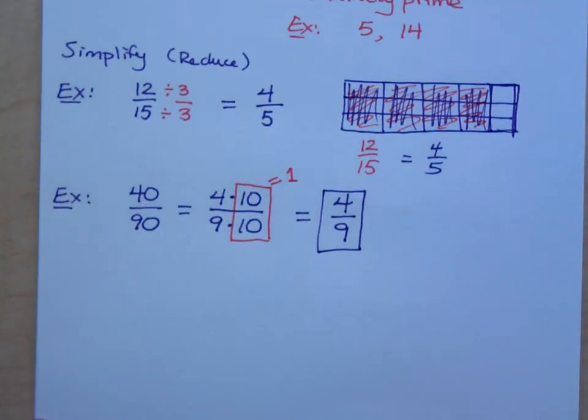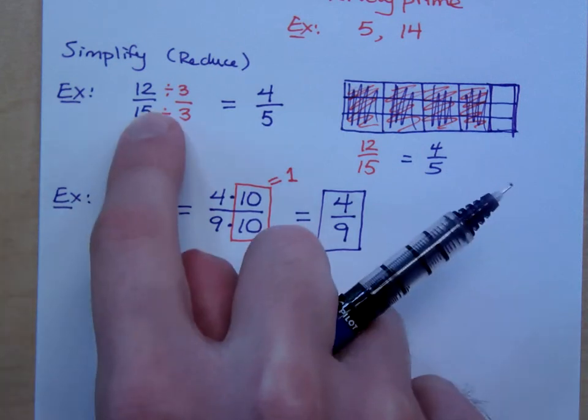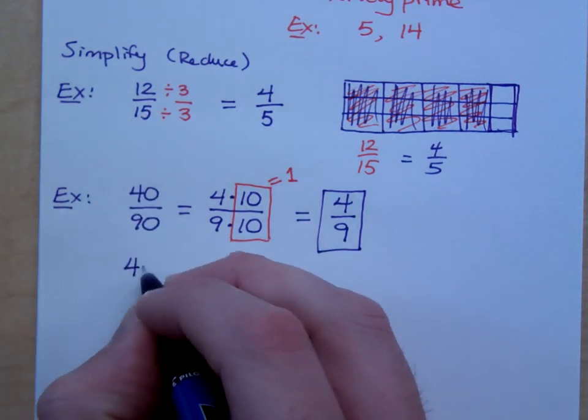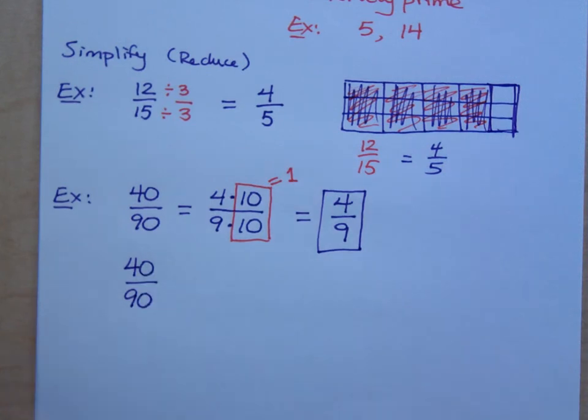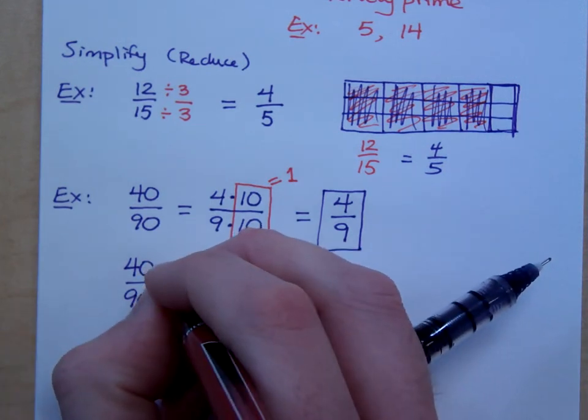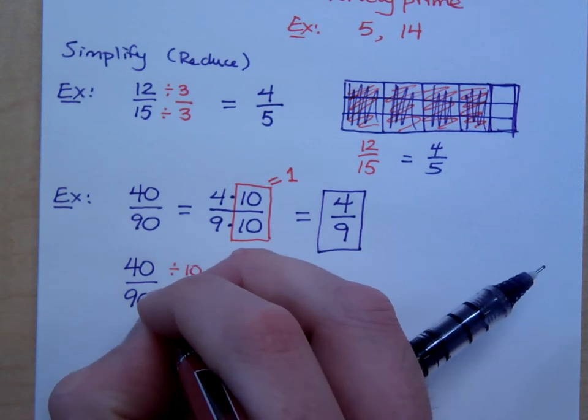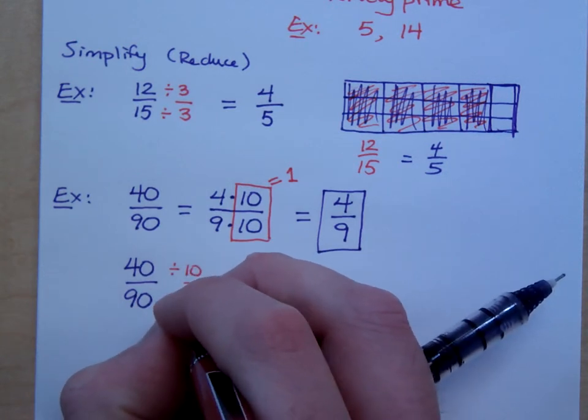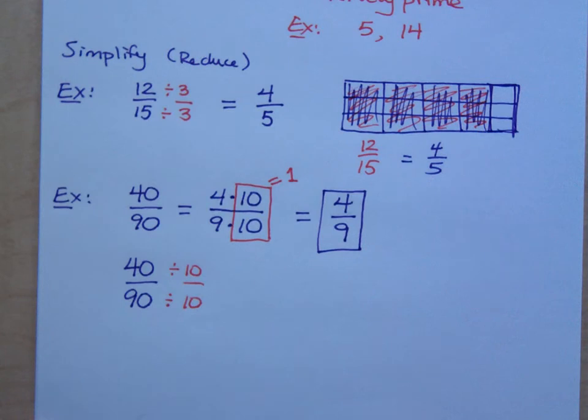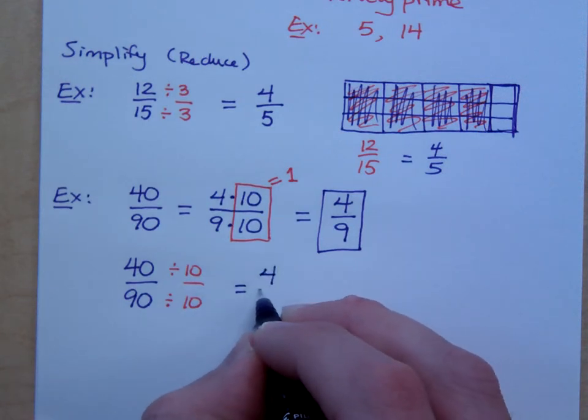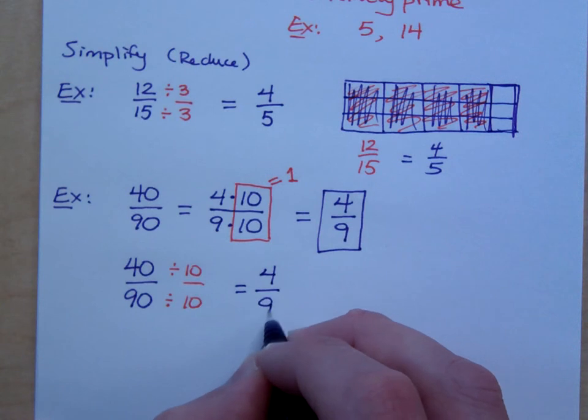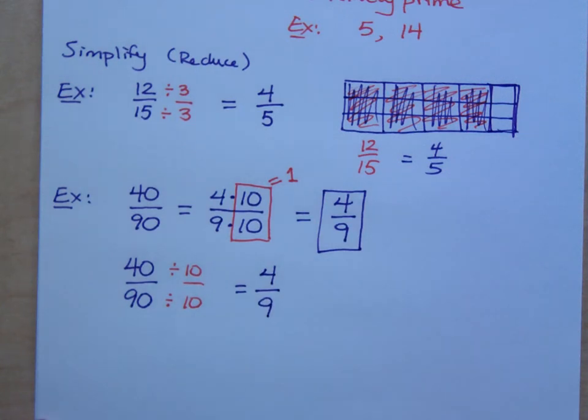So let me show you the way that we would have done this problem like the last guy. An alternate way of doing this is you say, okay, I've got 40 over 90, and you guys would say there's a common factor of 10, so I'm going to divide both the numerator and denominator by 10. And what's 40 divided by 10? 4, and what's 90 divided by 10? 9.